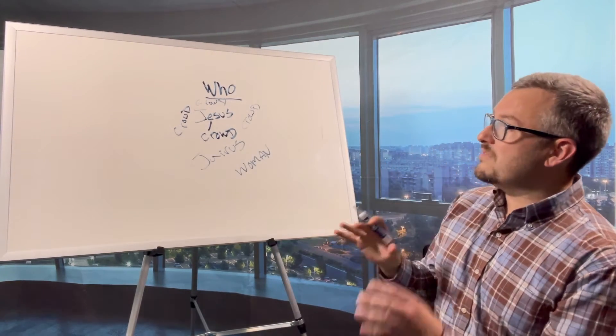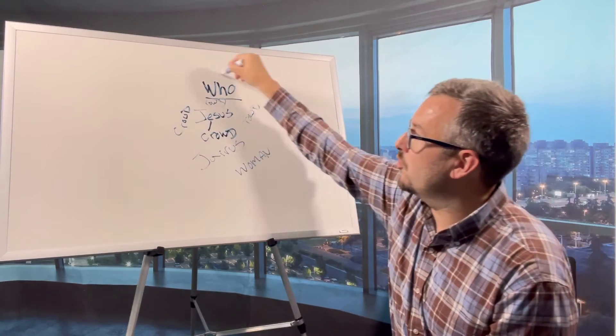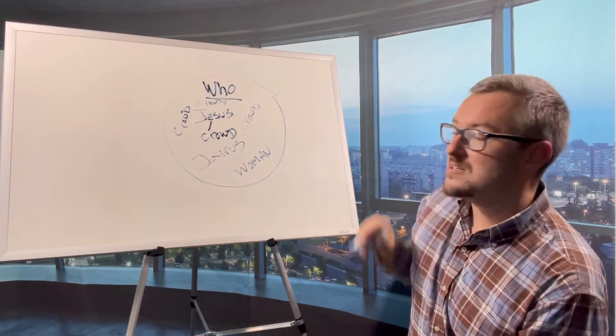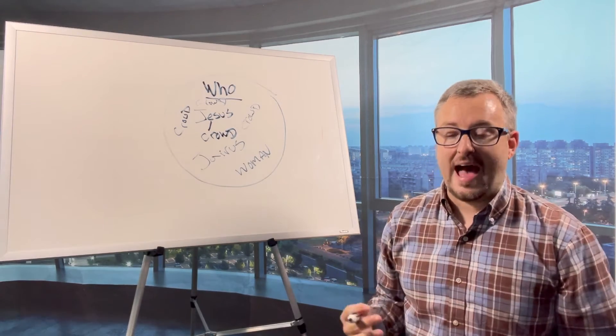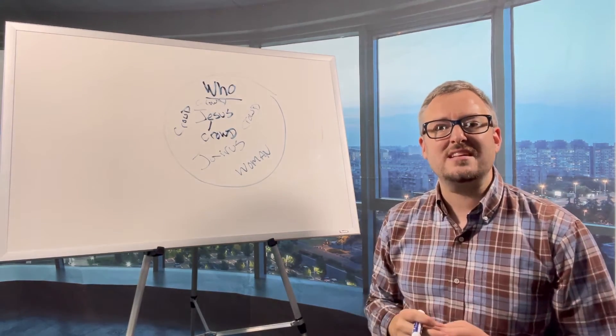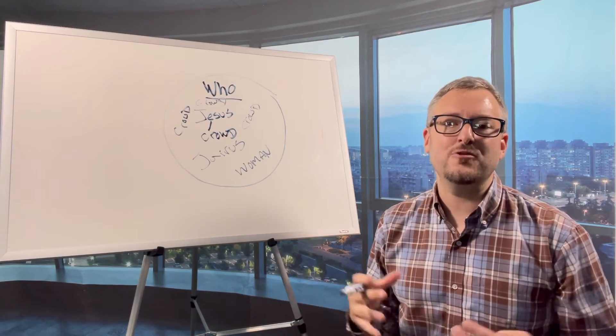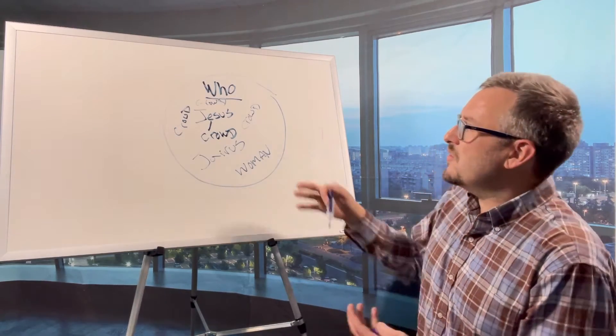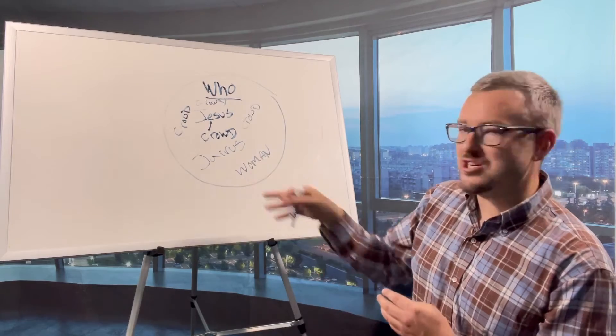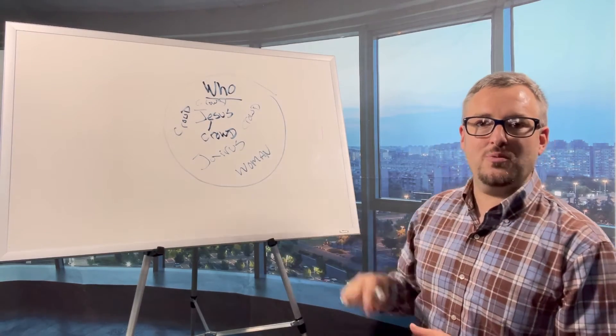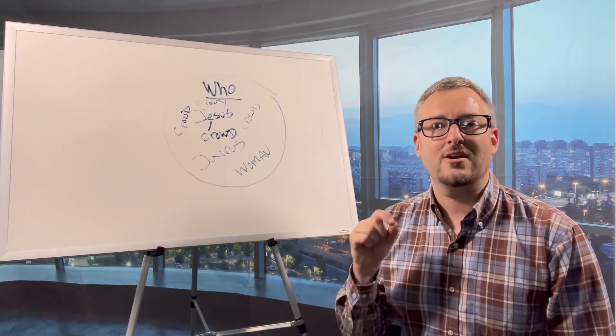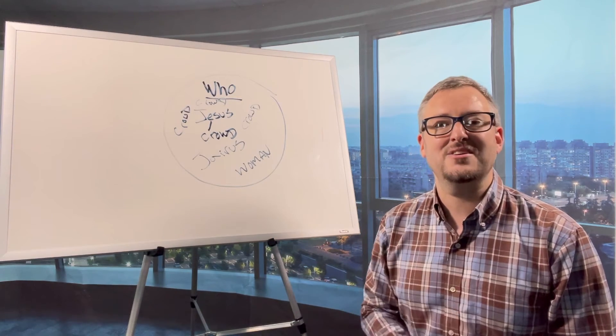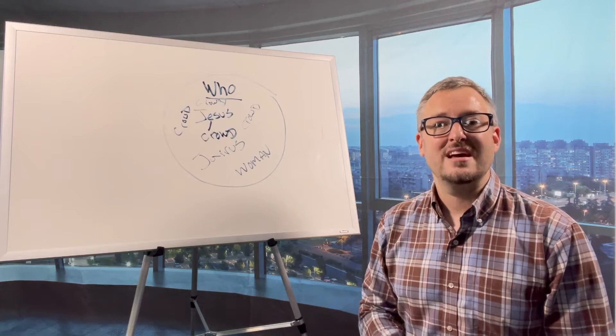So what we've now done is identified all of the who in this particular passage. And so as you're doing that, you can then start to investigate more deeply if you decide to on who is Jesus, who is Jairus, who is the woman, who is the crowd. But as you're starting out, just start at the surface level: find out who is in the text, identify those, and then you can go back and ask other questions.